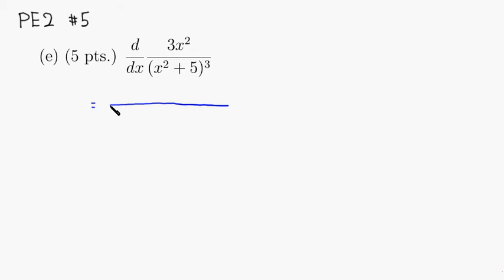Square the bottom, so we have quantity x squared plus 5, and it's already cubed, so it's going to be 6th power.